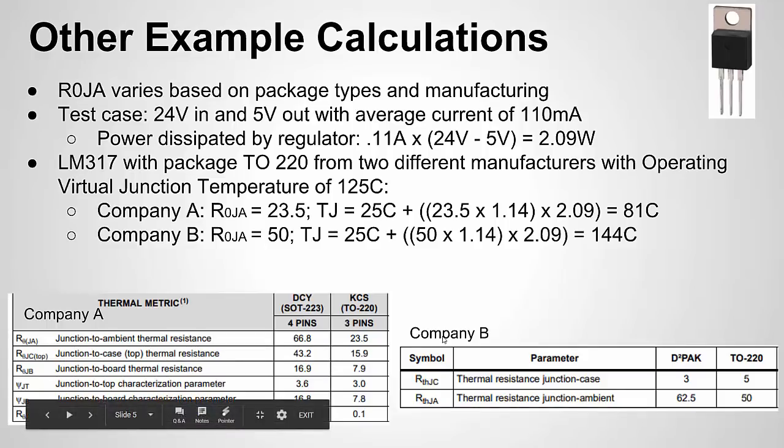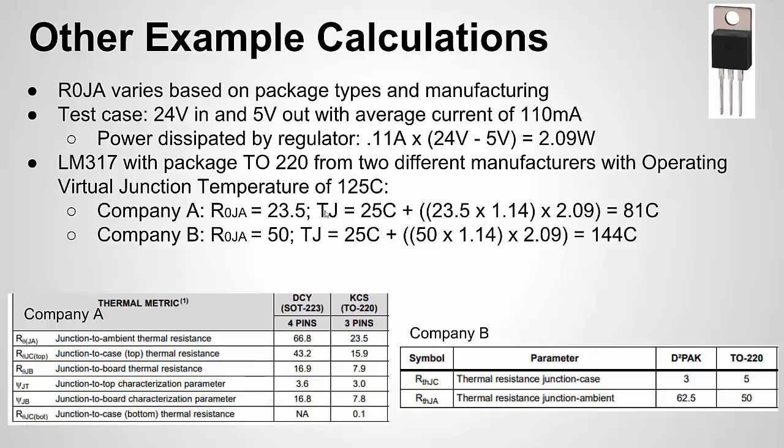For company A, if I'm going to operate around 25 degrees C, and I do my calculations, remember the formula: we have the power times R theta JA. I'm going to add my altitude factor because I live in Colorado. This was for 5,000 feet above sea level, so it's 1.14. I come out to 81 degrees Celsius. What does that mean? That means if I'm using this chip in these conditions, this is going to be the temperature of the package, of the chip, of the junction. Its spec is 125 degrees C, so we're well within it. Even if I go above ambient temperatures of 30 or 35 degrees Celsius, I'm still going to be within the operating range of this chip. Company A will work for me.